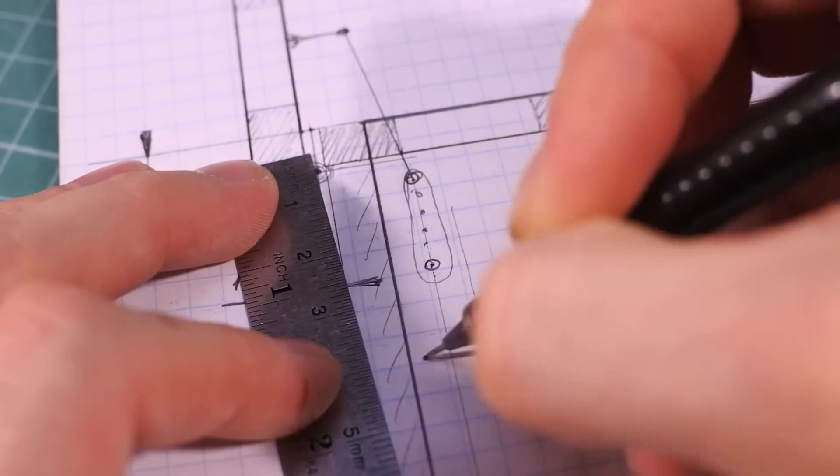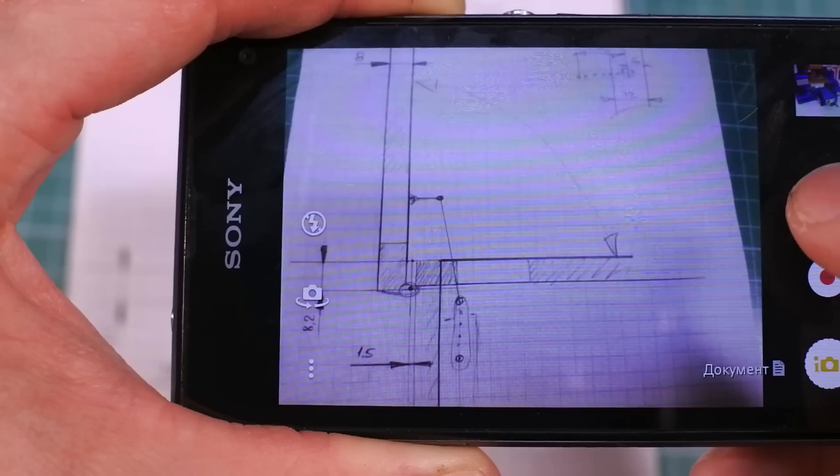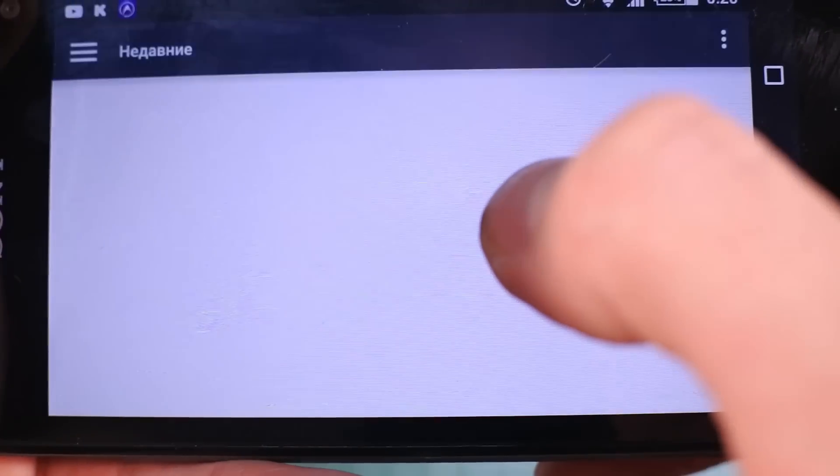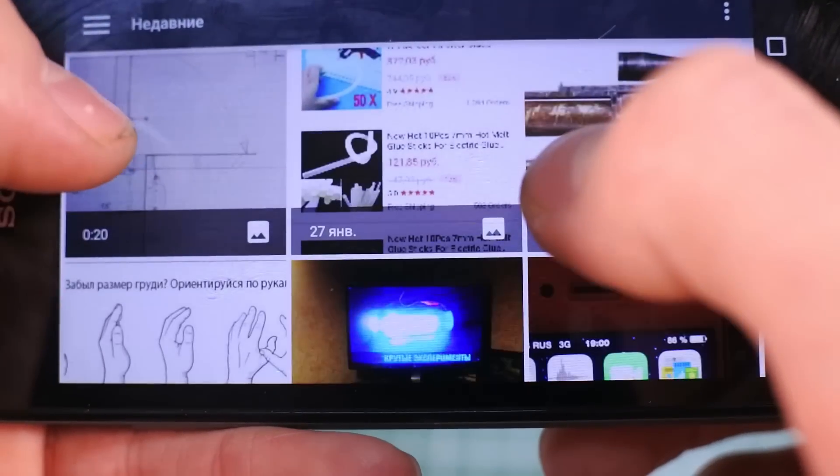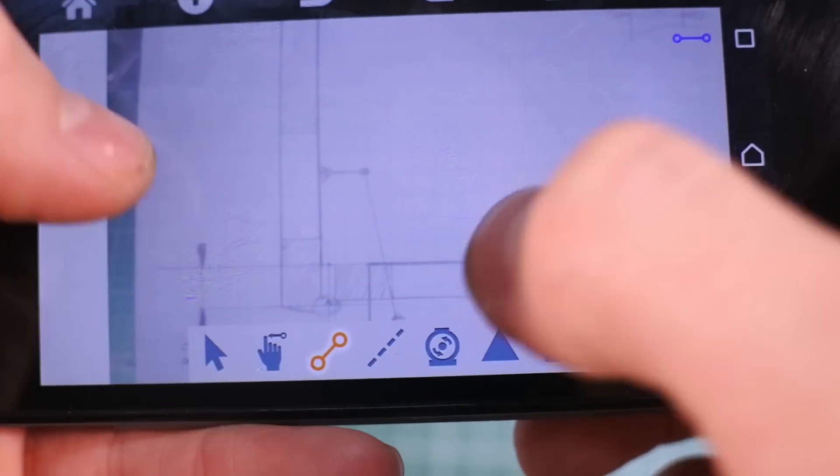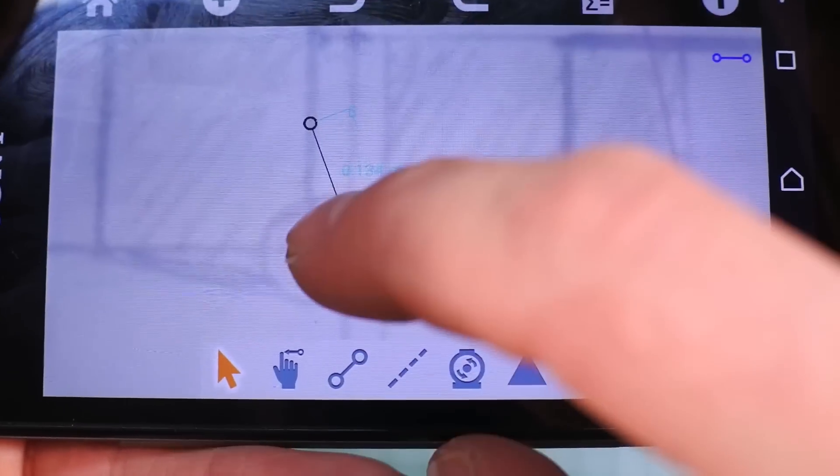But will this mechanism enable it to operate? Let's find out using the Autodesk Force Effect Motion. I take a photo of my sketch and upload it in the Force Effect application on my smartphone. In this application I can build my mechanism and explore it.